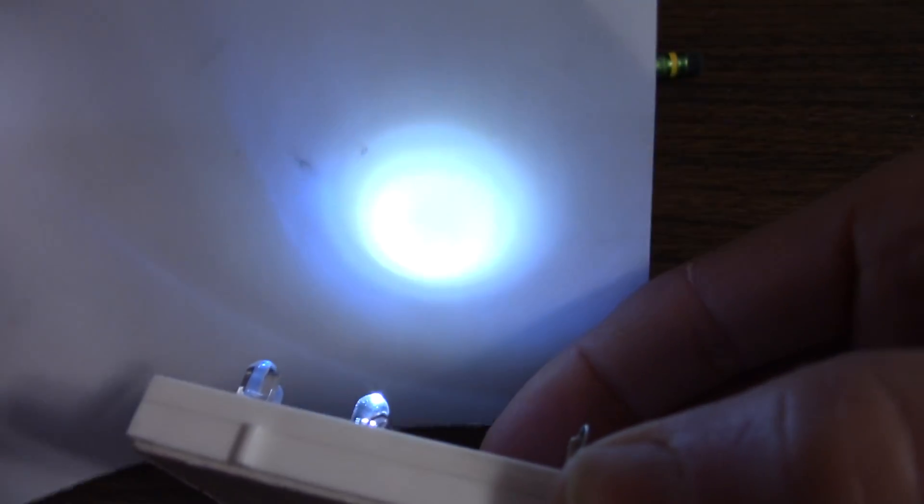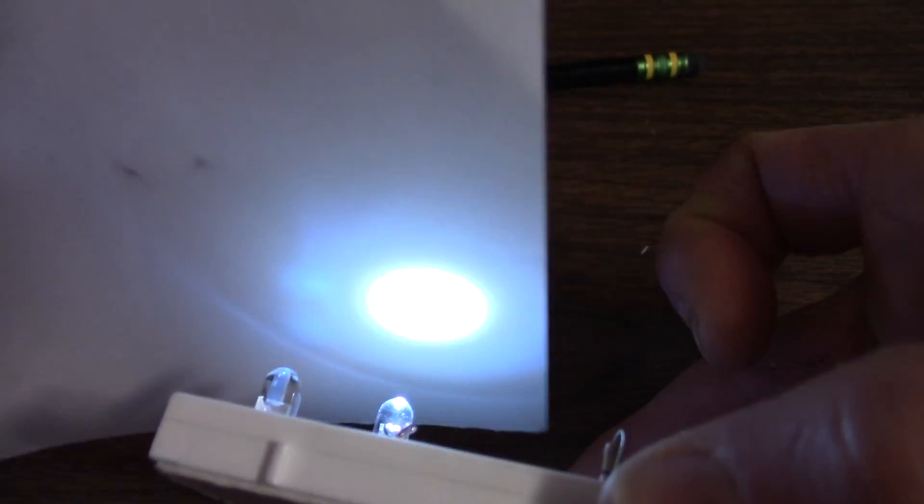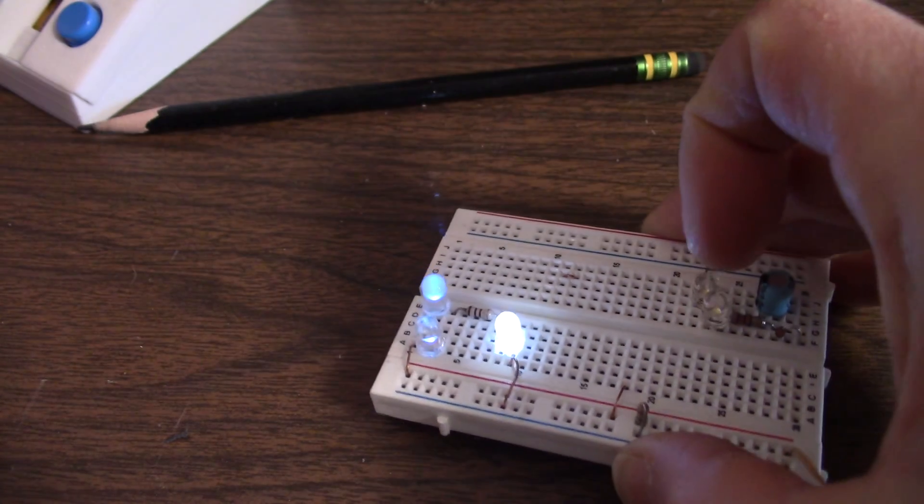And here is an early 5-millimeter LED-producing white light, as you can see here. And see, it's fairly bright. Not nearly as bright as the ones we have today. But much brighter than the silicon carbide LEDs.